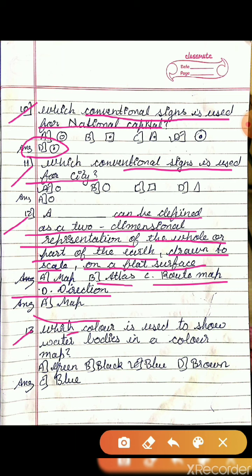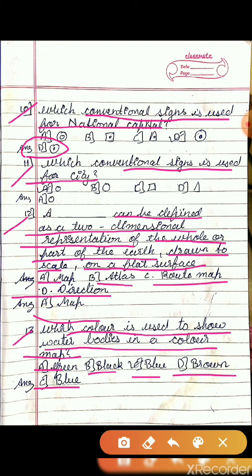Question 13: Which color is used to show water bodies in a color map? Option A is green, option B is black, option C is blue, option D is brown. The answer is C, blue color.